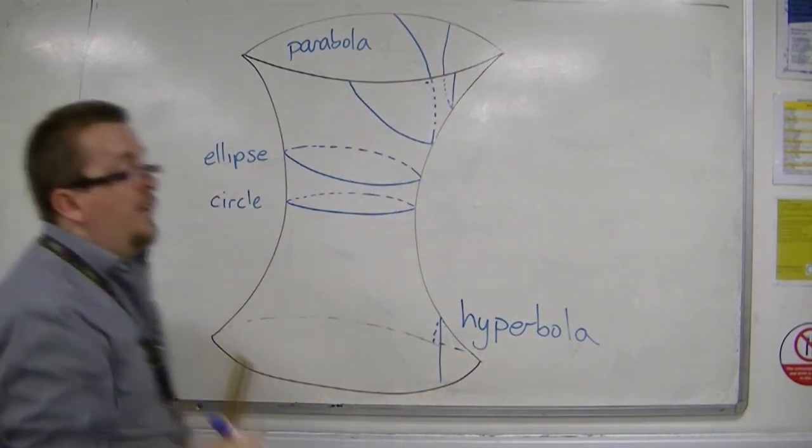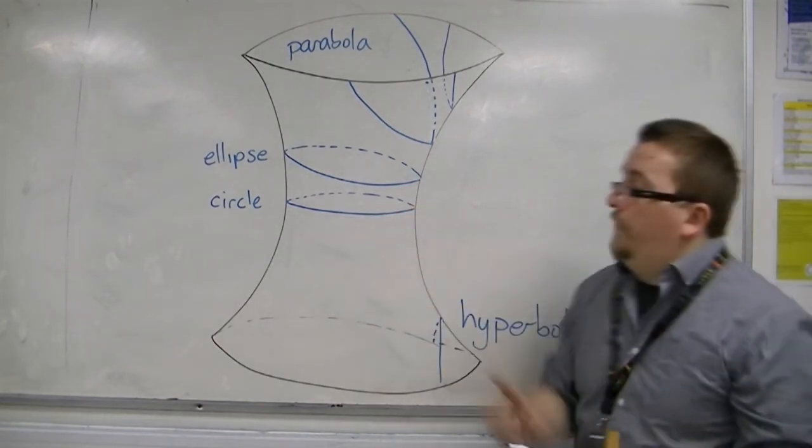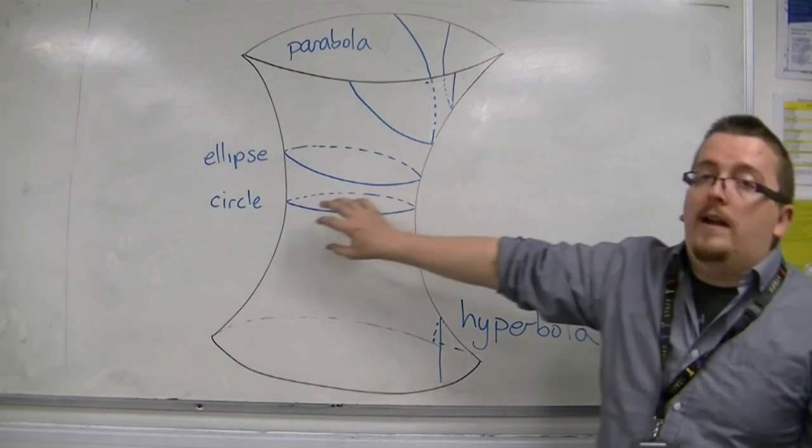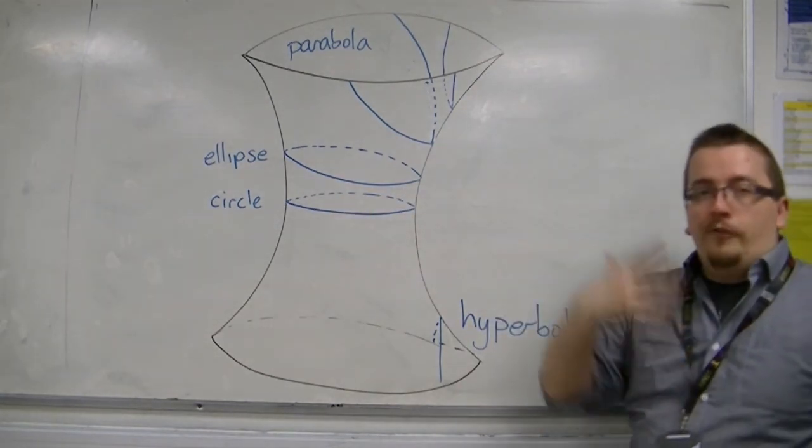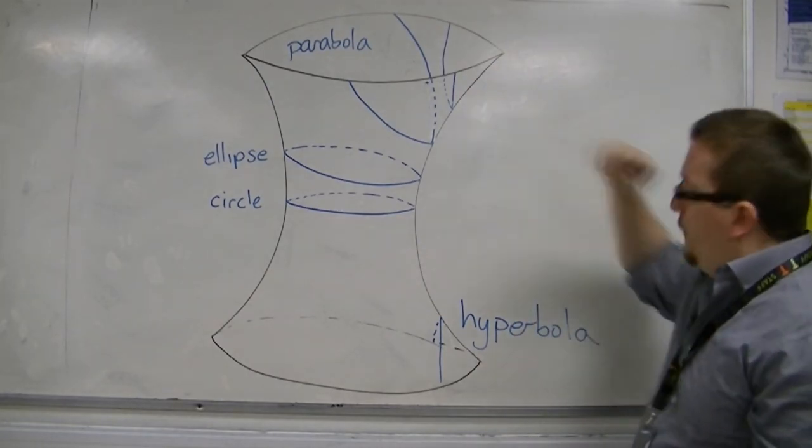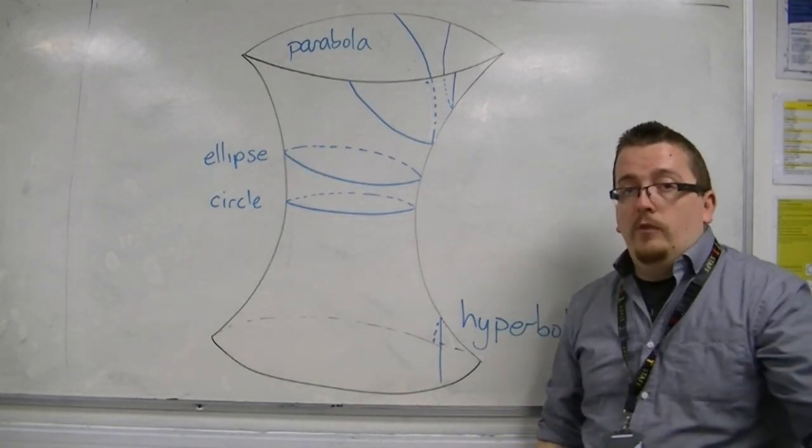The equation of a circle, that is stuff that we look at in Core 1. So as part of FP1, we look at ellipses, parabolas, and hyperbolas. And that's what we're going to be considering in the next few videos. All right, let's get started.